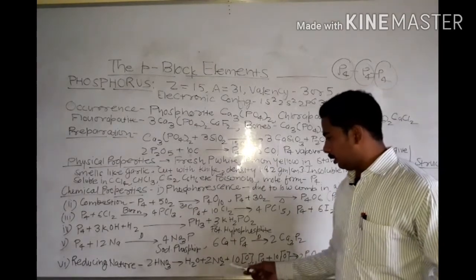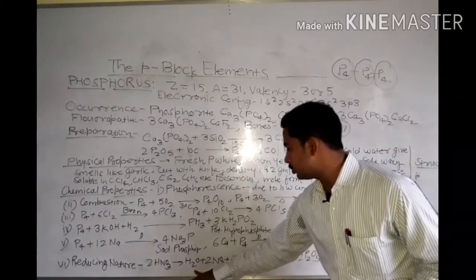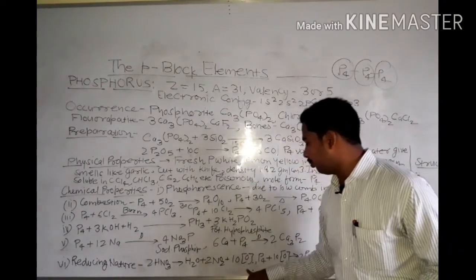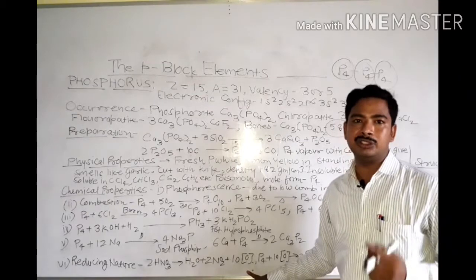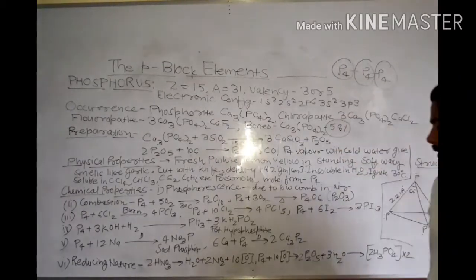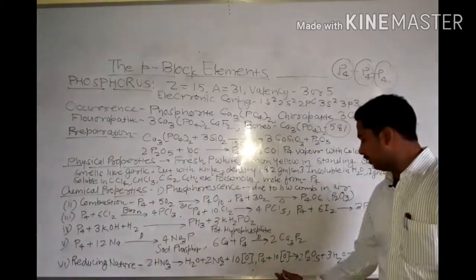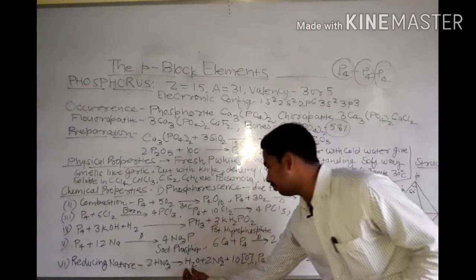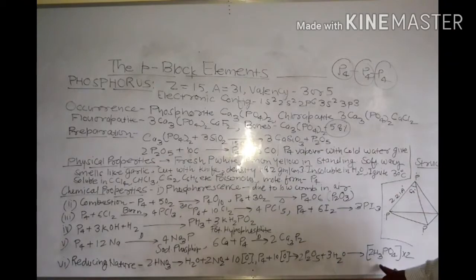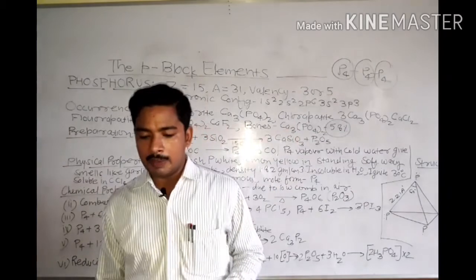In the reaction with nitric acid, nitrogen dioxide is produced along with nascent oxygen atoms. This nascent oxygen oxidizes phosphorus further to give P2O5, which reacts with water to form H3PO4 — phosphoric acid. These are the chemical properties.